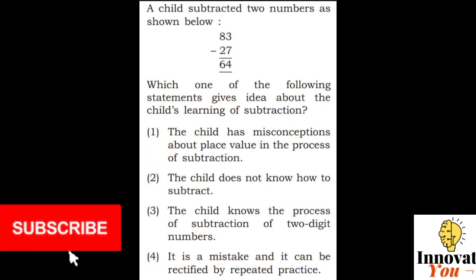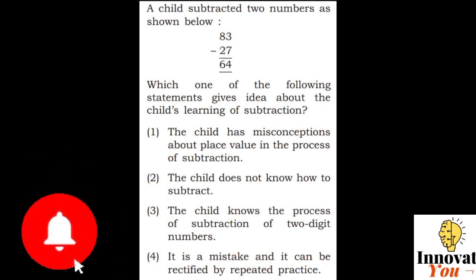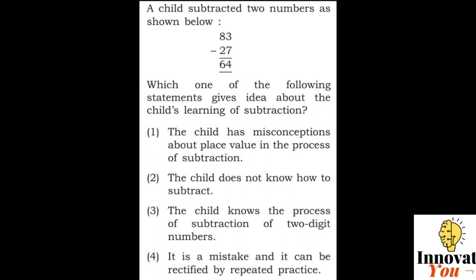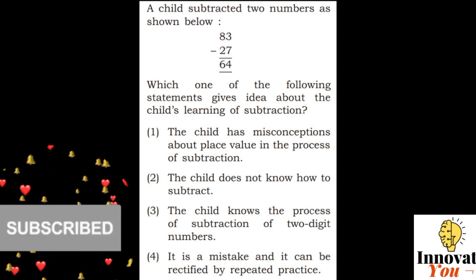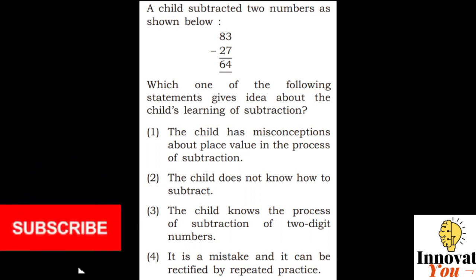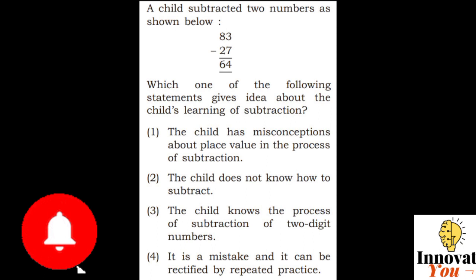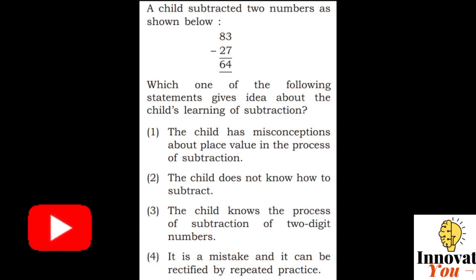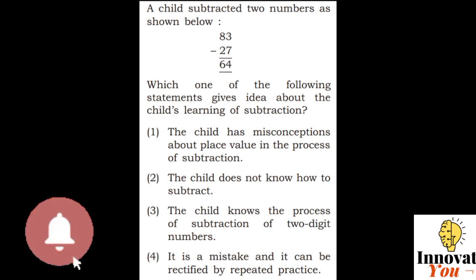Option 1: The child has misconceptions about place value in the process of subtraction. Option 2: The child does not know how to subtract. Option 3: The child knows the process of subtraction of two-digit numbers. Option 4: It is a mistake and it can be rectified by repeated practice.